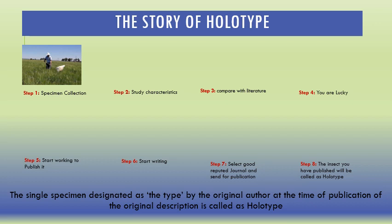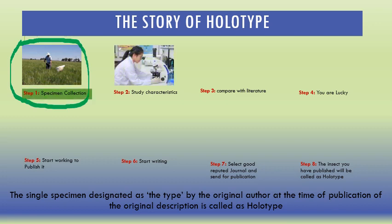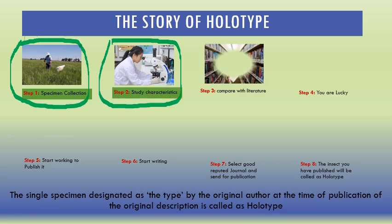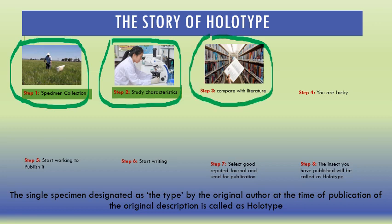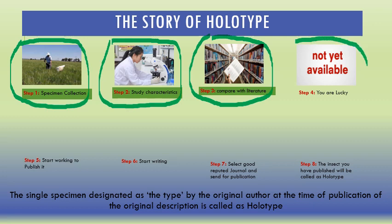We will now understand this step by step. Step one: you collect a specimen. Step two: you study the specimen's characteristics. Step three: you compare your characteristics with the literature. If you are lucky and find no existing literature matching your specimen, you proceed.